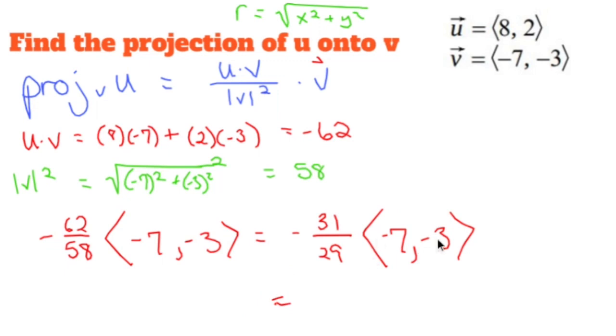And just multiply that fraction to both of these numbers, and you end up with a terrible, terrible, terrible fraction. 217 over 29 and 93 over 29. All right.